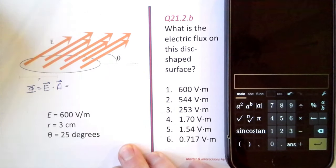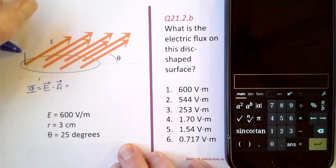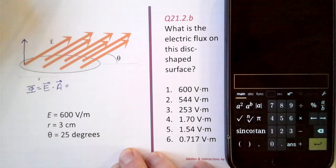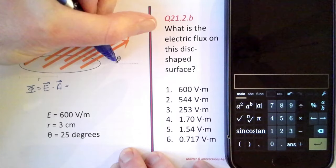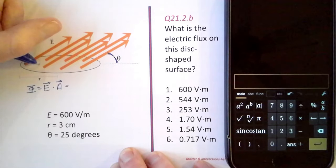And we want the part of the electric field that is poking through the plane, perpendicular to the plane. We are given this angle theta here. So that's this angle in here.